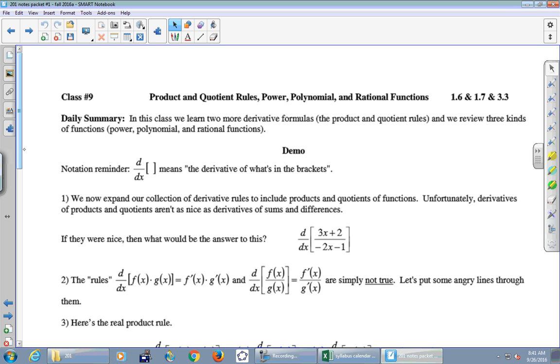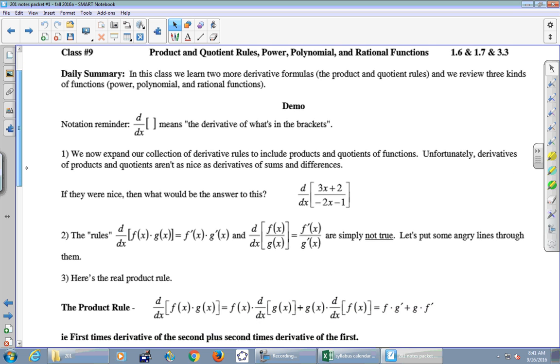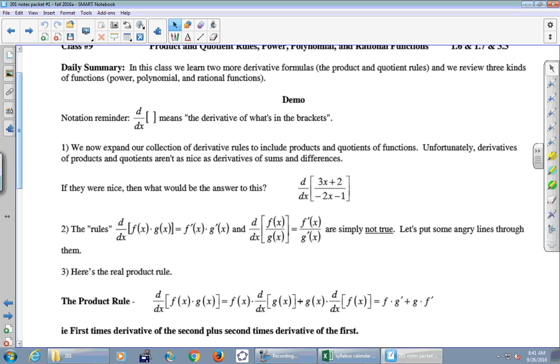Okay, so let's take a look at the top of page 53. In this class, we learn two more derivative formulas, the product and quotient rules. And we review three kinds of functions: power functions, polynomial functions, rational functions. All right, so just a notation reminder. When you see d over dx and then some brackets, it means the derivative of what's in the brackets. And again, we'll see that formally very soon. But for right now, we're just going to use it.